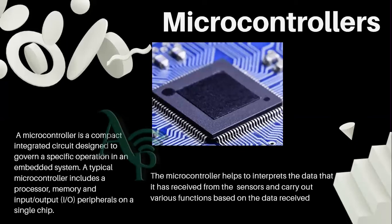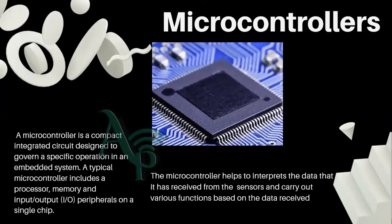The major function of the microcontroller is to control everything happening within the embedded system. The microcontroller is a compact integrated circuit designed to govern a specific operation in an embedded system. A typical microcontroller includes a processor that helps to process information, internal memory where it can save data — both read-only memory and random access memory — and it also has input and output peripherals, all on the same chip.